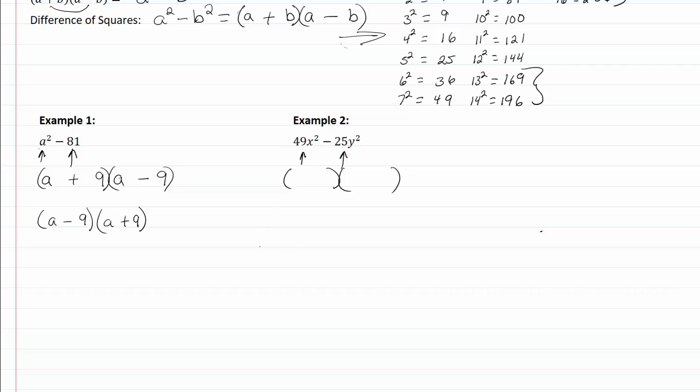The square root of my first term is seven x, the square root of my second term is five y, plus in one, minus in the other. Again, order doesn't matter and you've got these factored.